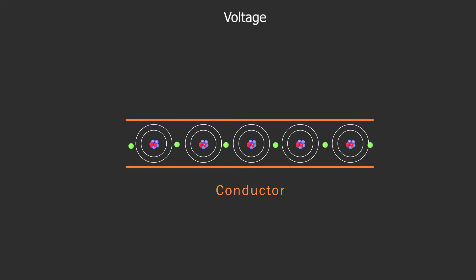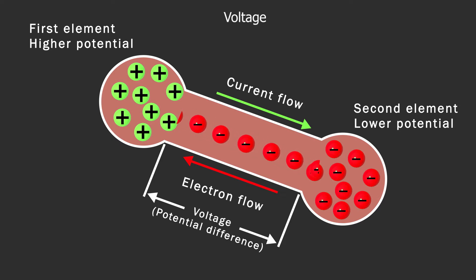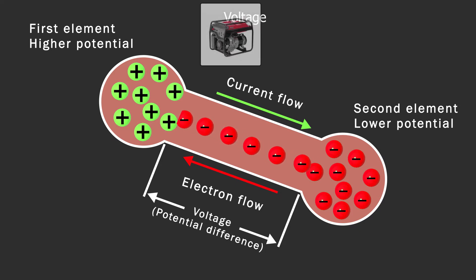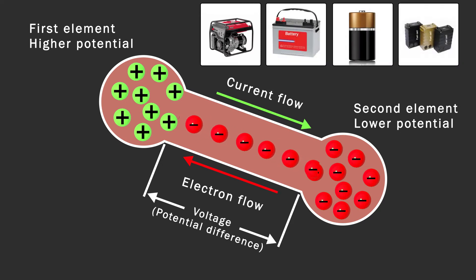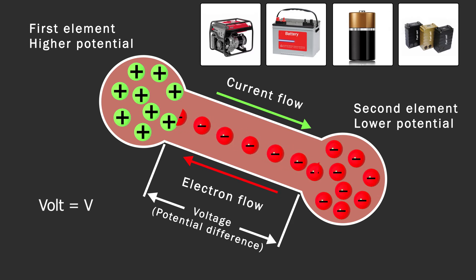What is voltage? Electric current is the flow of electrons in a conductor. The force required to make current flow through a conductor is called voltage, and potential is another term for voltage. For example, an element with more positive charges has higher potential, while an element with more negative charges has lower potential. The difference between two points is called potential difference. Electromotive force is the force which makes current continuously flow through a conductor, and can be generated from a power generator, battery, flashlight battery, fuel cell, etc. Volt, abbreviated V, is the unit of measurement used interchangeably for voltage, potential, and electromotive force. One volt means a force which makes a current of one amp move through a resistance of one ohm.